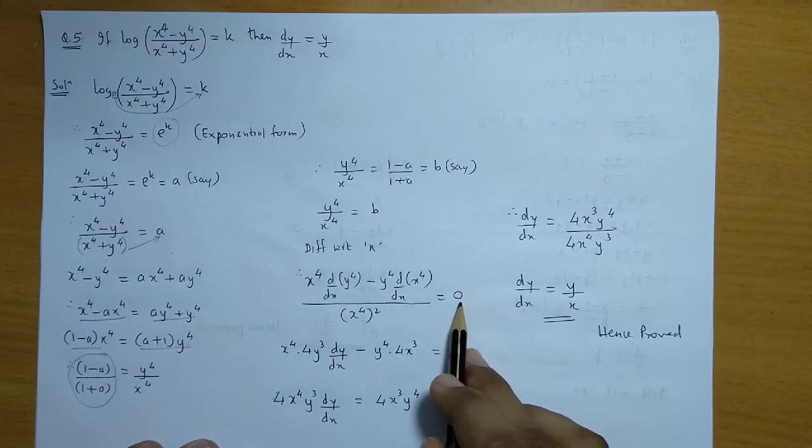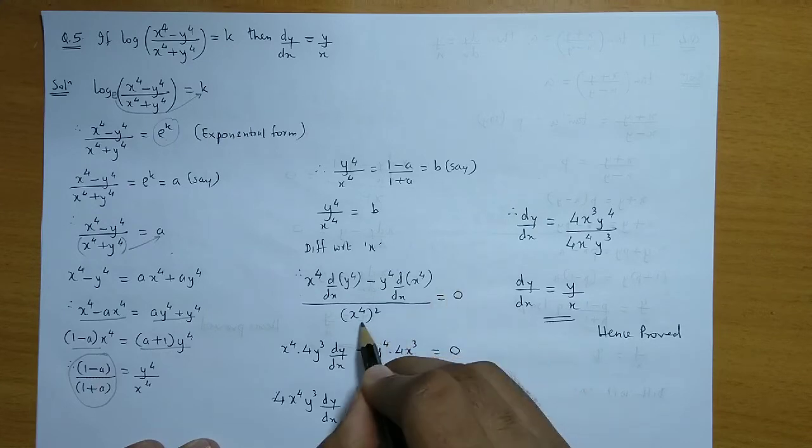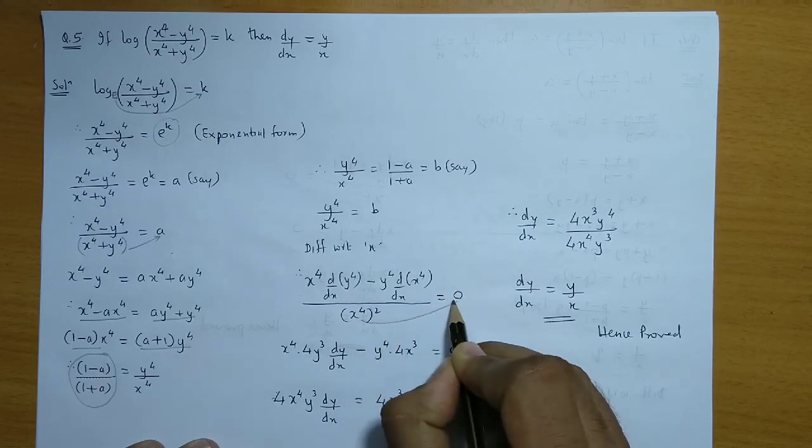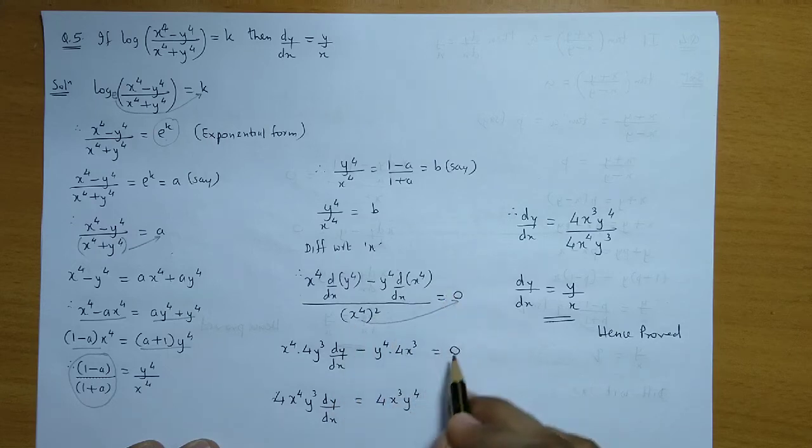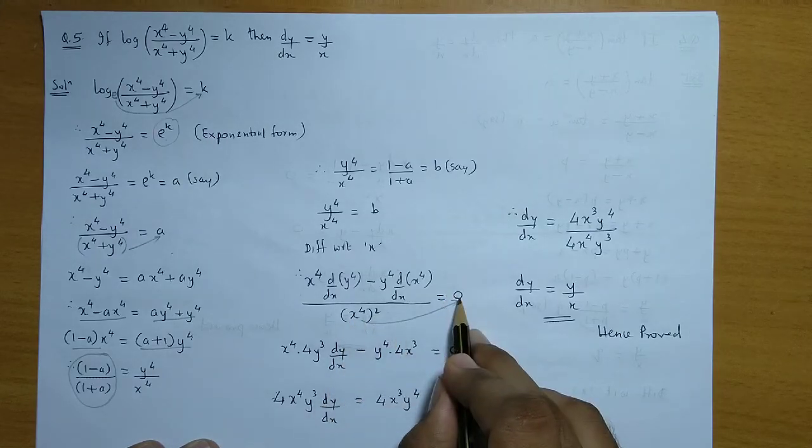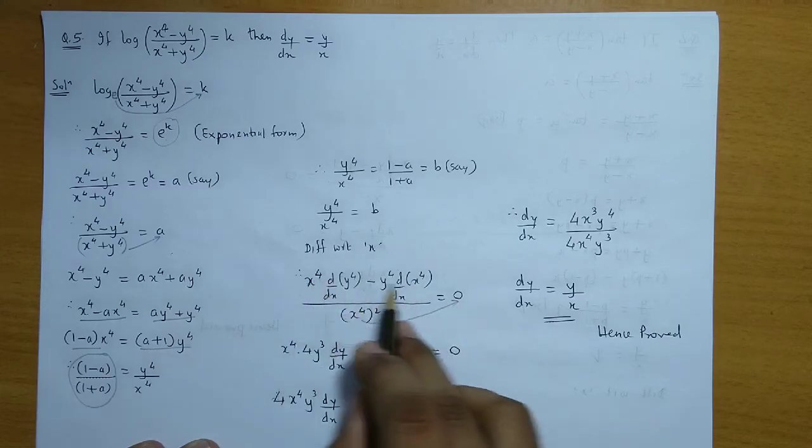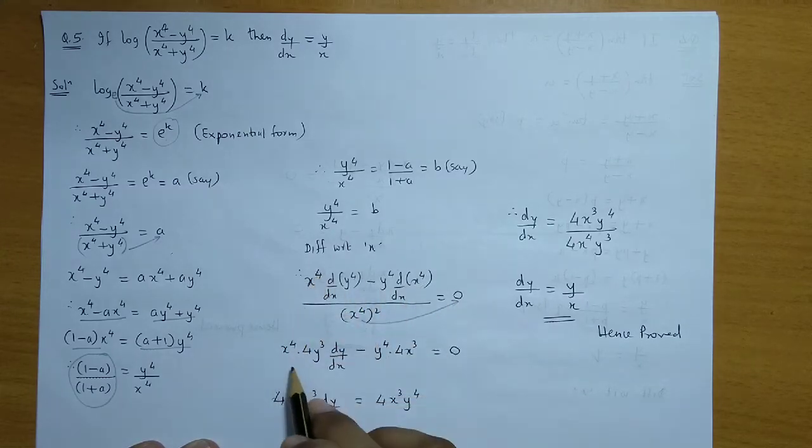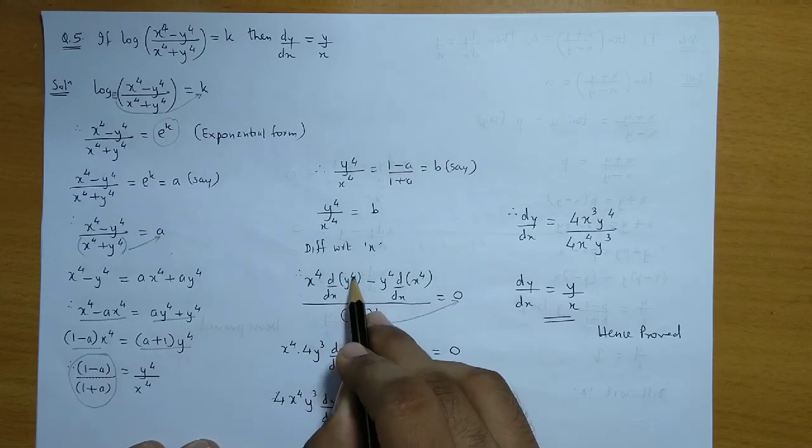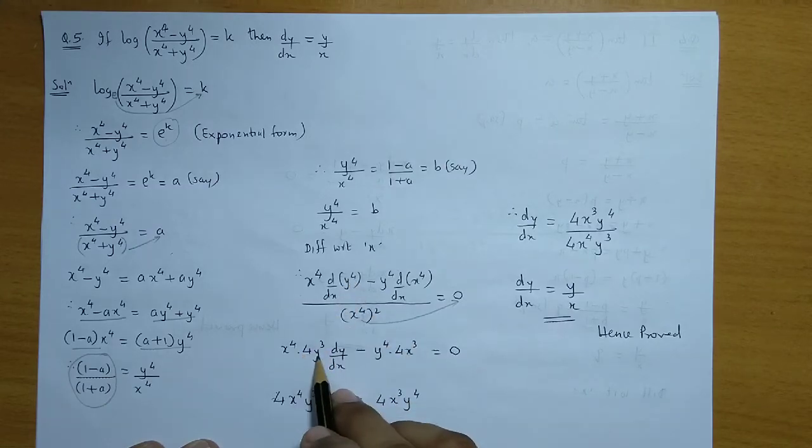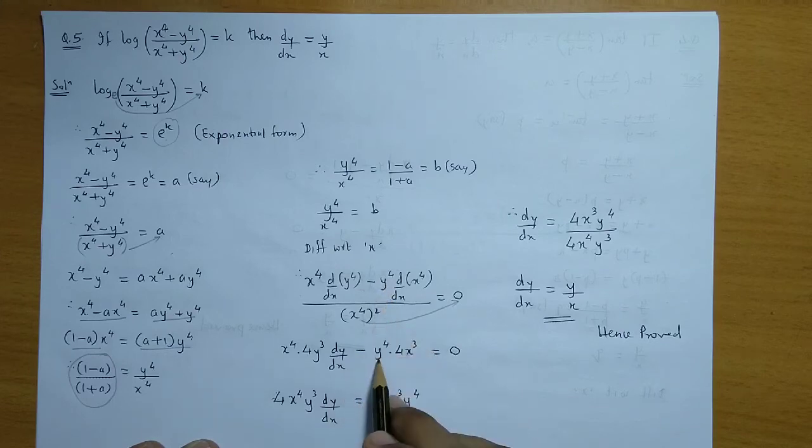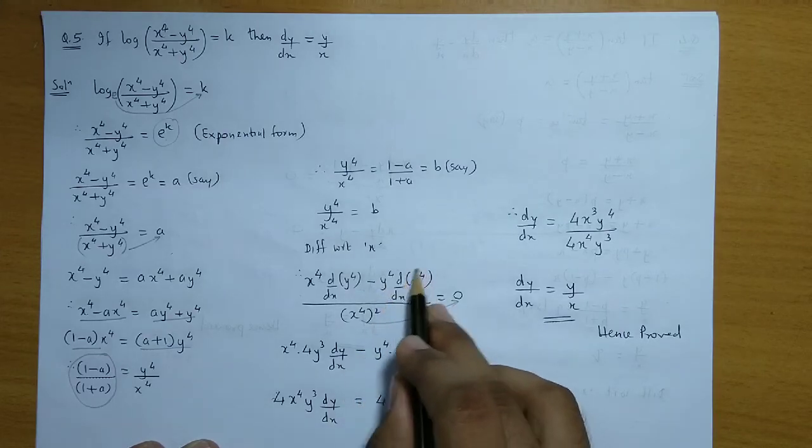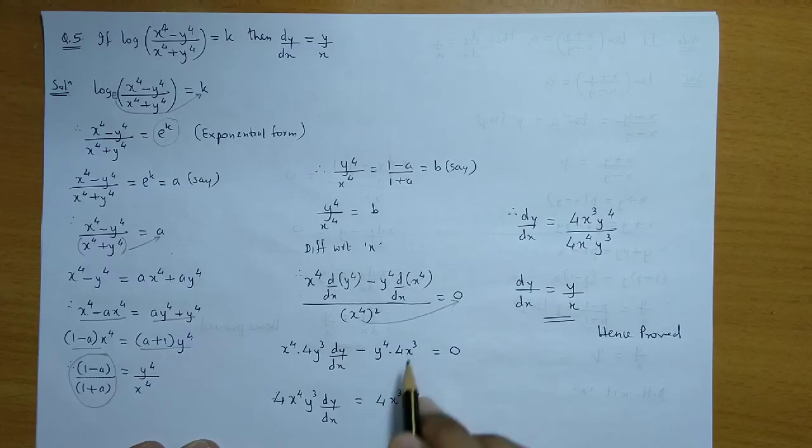And right hand side, b ka derivative is zero. Now again if we multiply, (x⁴)² into 0, so right hand side will be 0 and the denominator will come out. Next we complete this derivative. So x⁴, derivative of y⁴ is 4y³ dy/dx, minus y⁴, and derivative of x⁴ is 4x³.